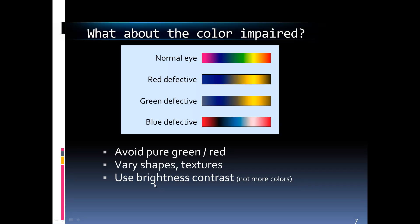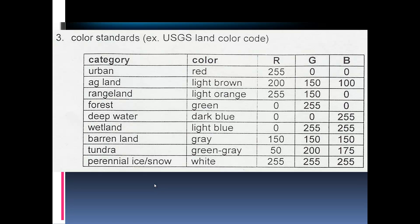You also want to keep in mind that maps often get converted to black and white, so you want your colors to be photocopy safe — able to convert from color to grayscale with enough shade differences. Avoid super bright contrast as well, since that can be hard on the eyes. You might also want to choose colors that meet established color standards, like the USGS land color codes — for example, deep water is expected to be dark blue and forests are expected to be green. If you're mapping money, you might use green since the US dollar is green.